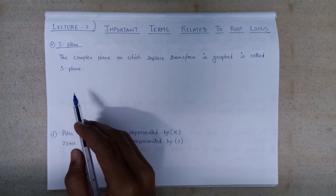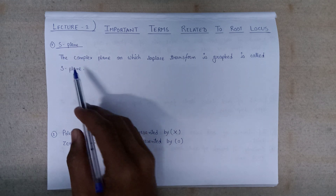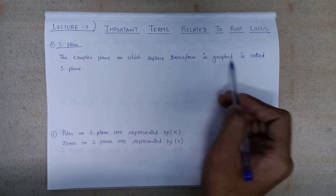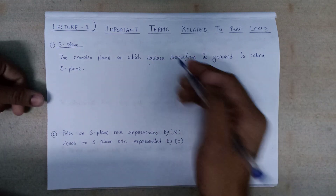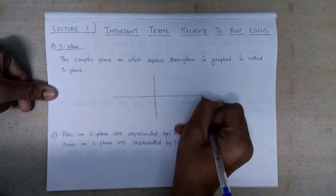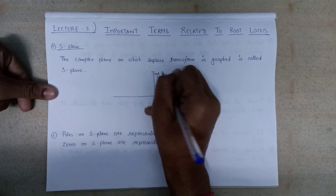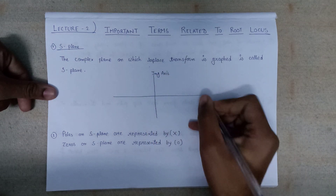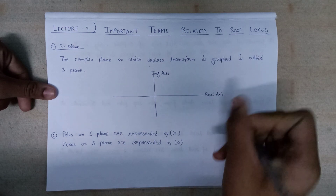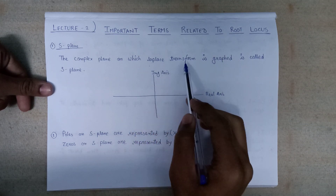The first and most important term is the S-plane. The S-plane is defined as a complex plane on which the Laplace transform is graphed. It has an imaginary axis and a real axis, and is generally used for graphing the Laplace transform.